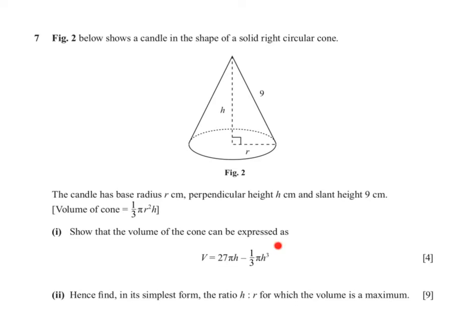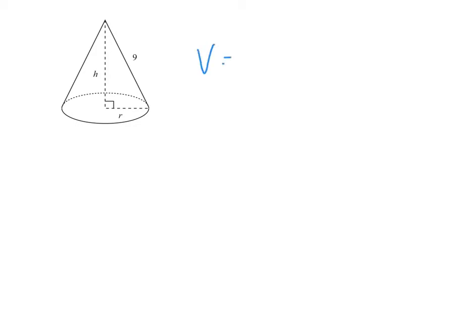Always remember though, if you cannot set this up, you can still do part 2 by writing the equation and then differentiating to find the maximum. So volume of a cone is 1 third pi r squared h.